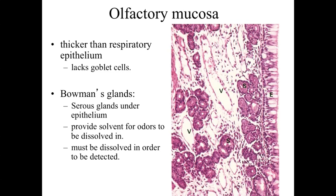If we take a look at the olfactory mucosa, we see that it's going to be thicker than the other areas of the respiratory epithelia. We'll get pseudo-stratified columnar epithelia. What's important to recognize is that in the olfactory mucosa, we're going to lack goblet cells — it's just going to be the pseudo-stratified columnar epithelia.